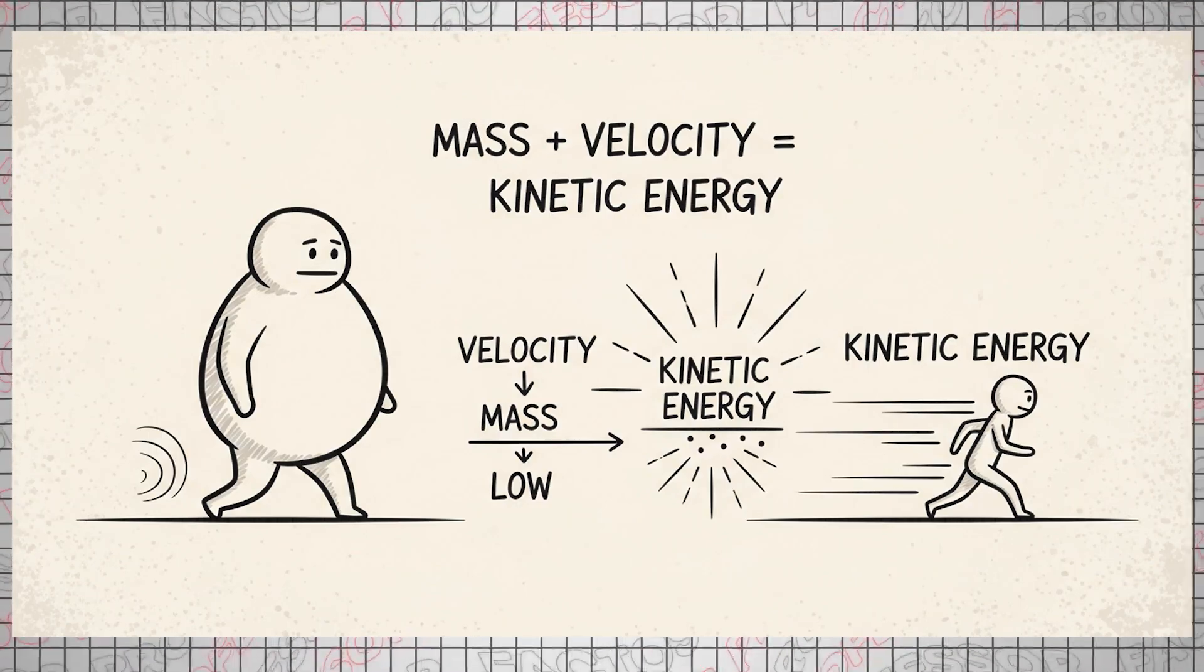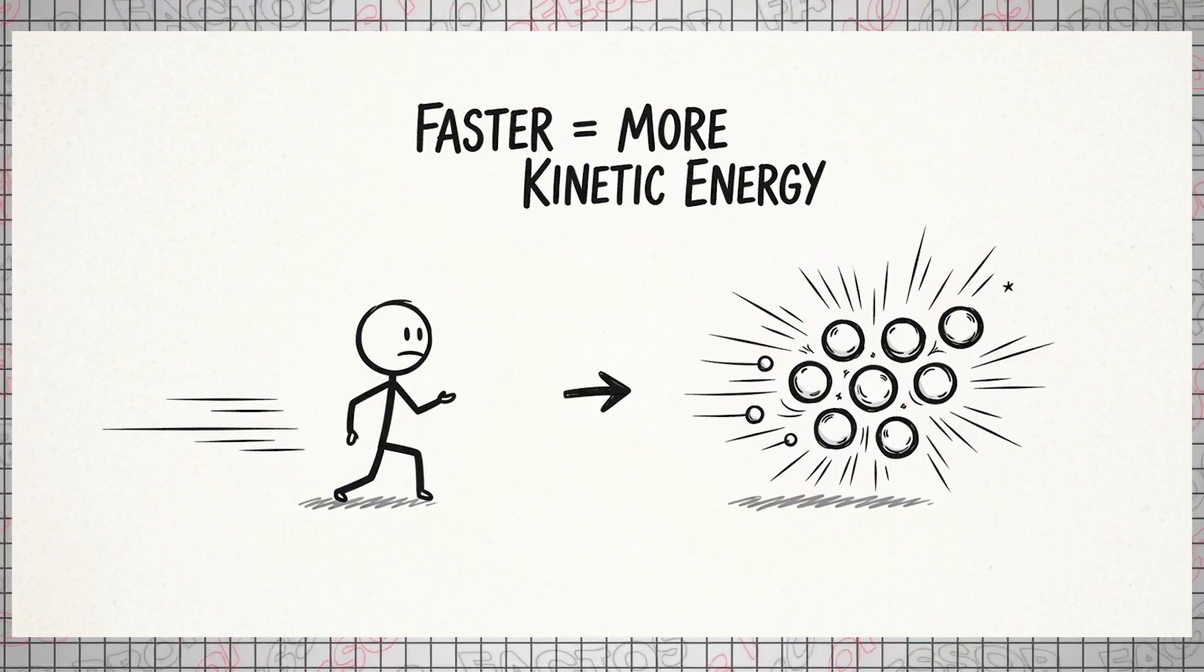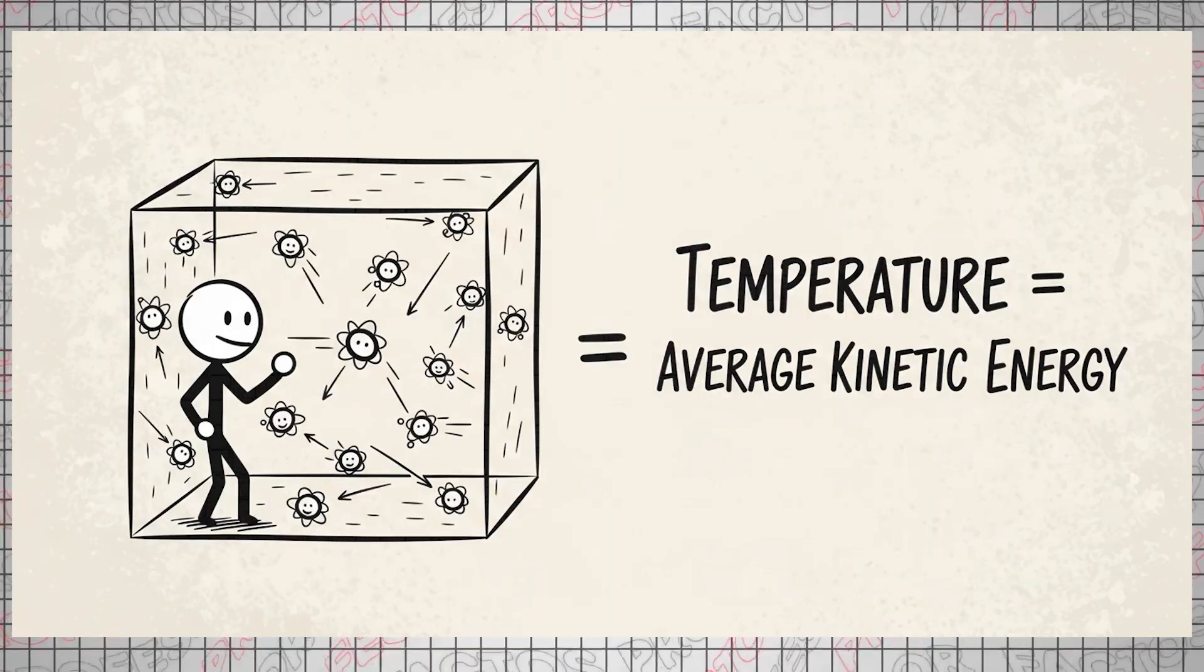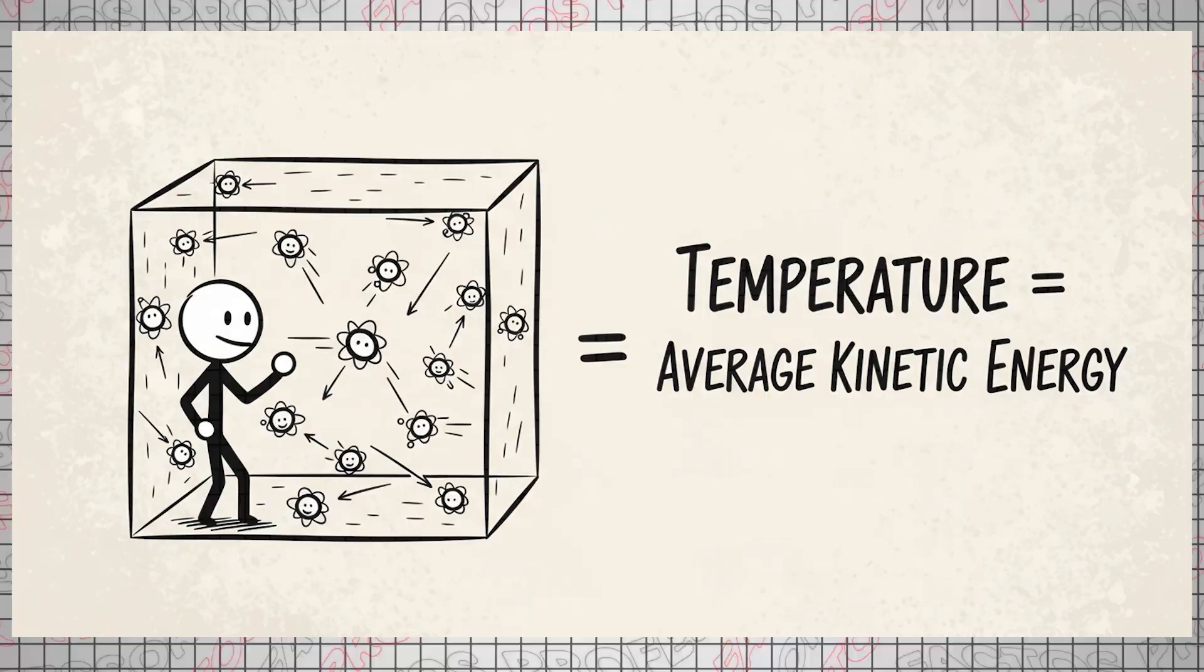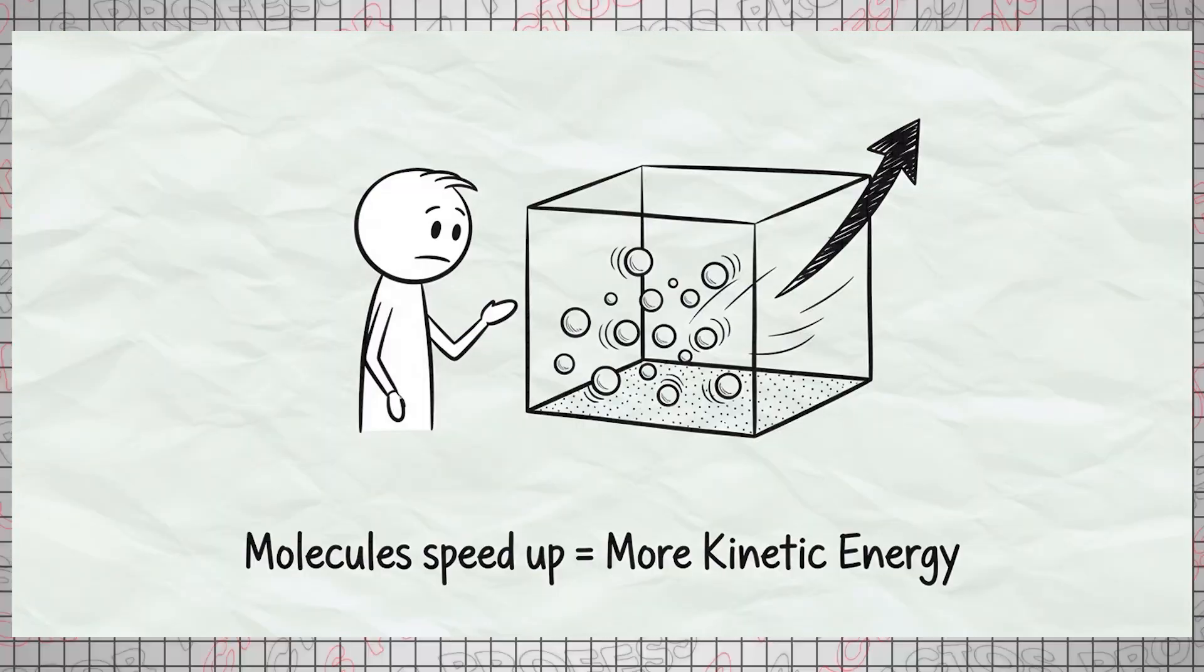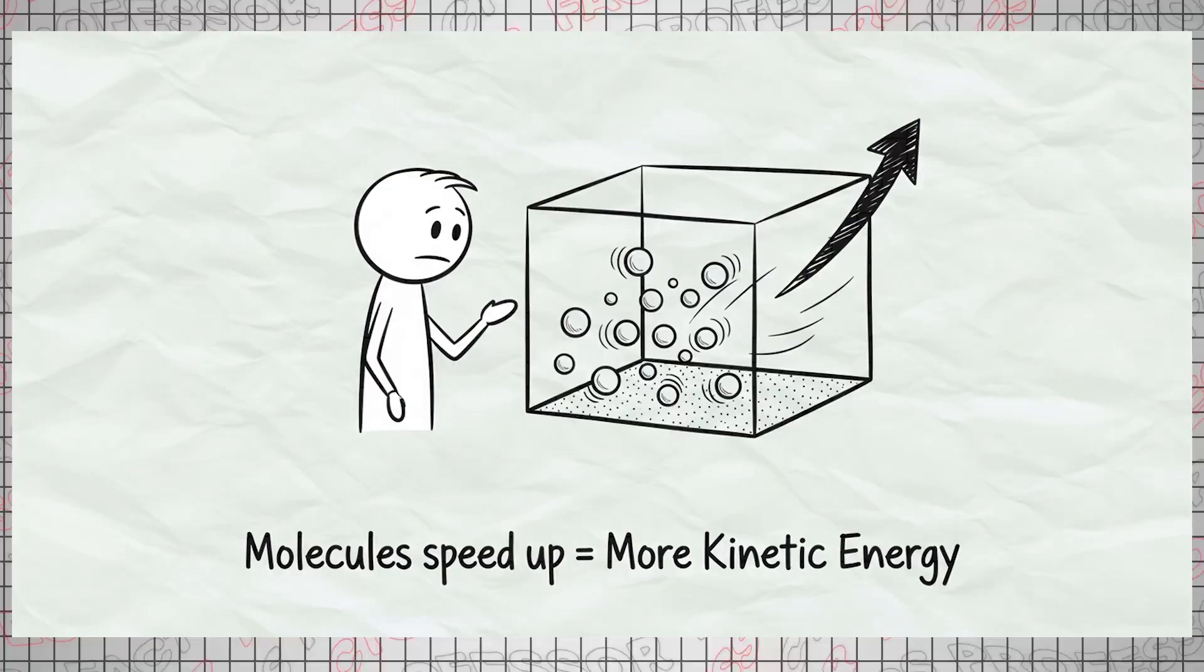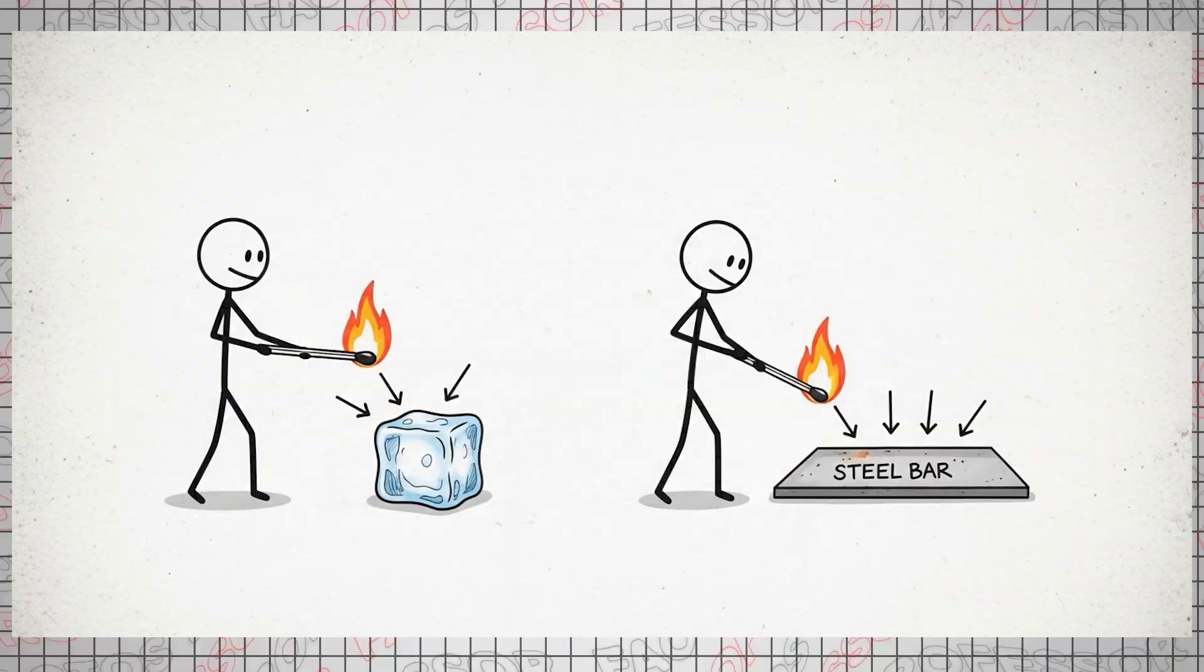Kinetic energy is directly proportional to an object's mass and velocity. Therefore, the faster atoms move, the greater their kinetic energy and the higher their temperature. In essence, an object's temperature is the average kinetic energy of its constituent molecules. In simpler terms, the faster the molecules in an object move, the greater their average kinetic energy and the hotter the object becomes, and vice versa.